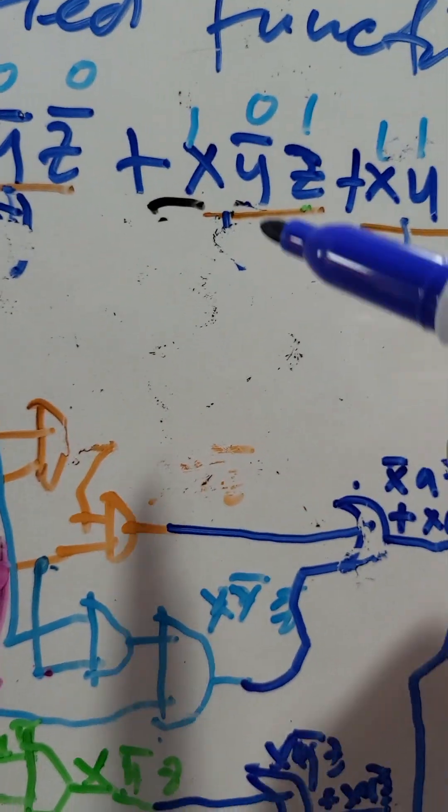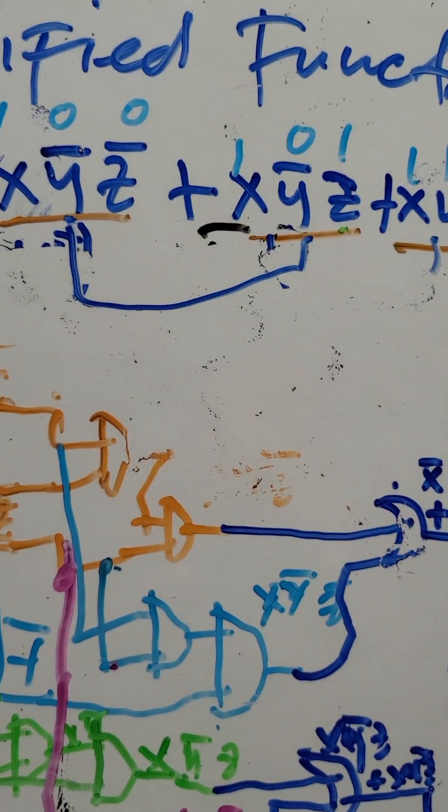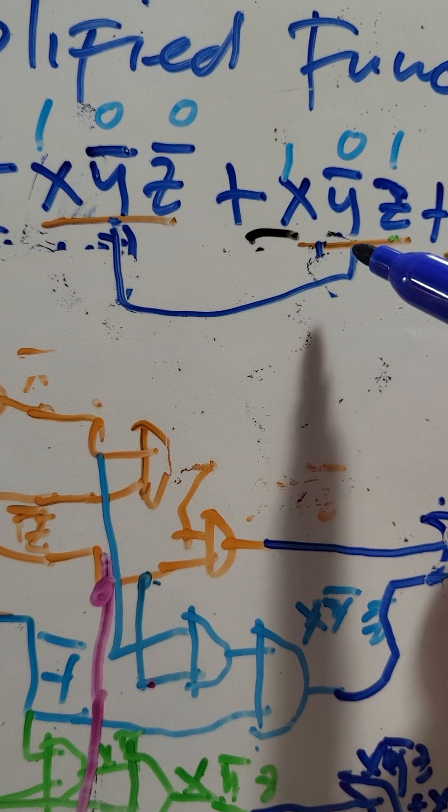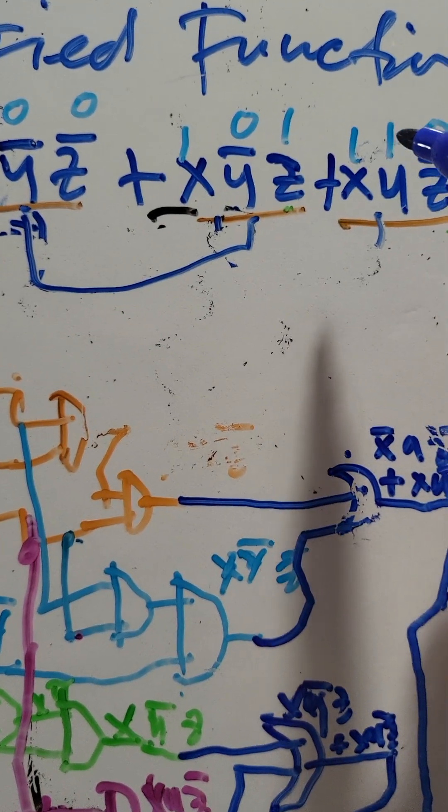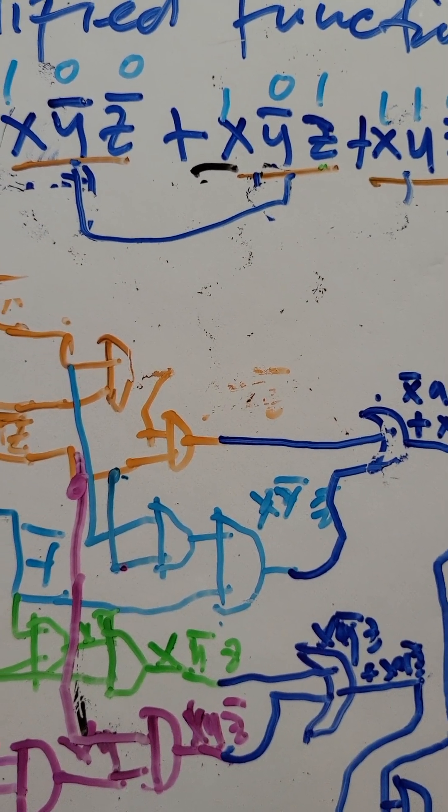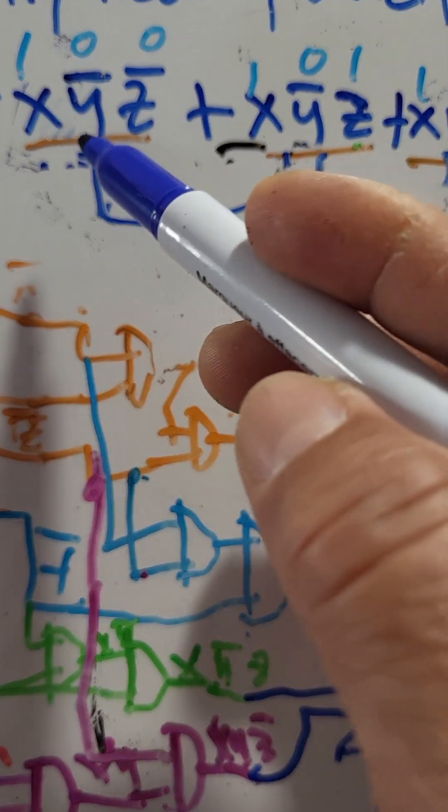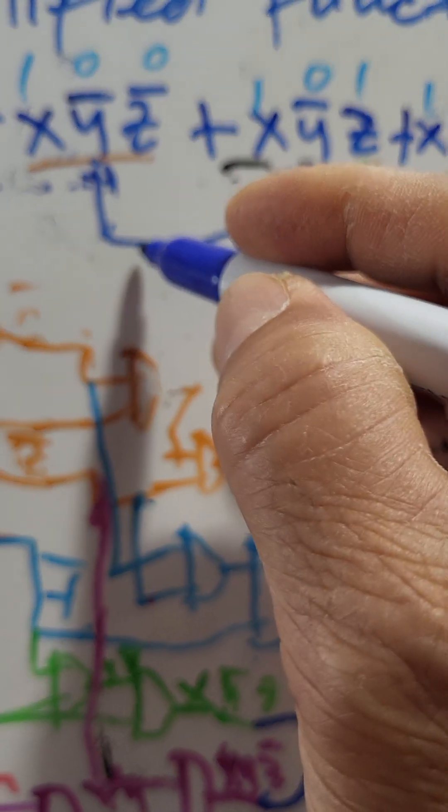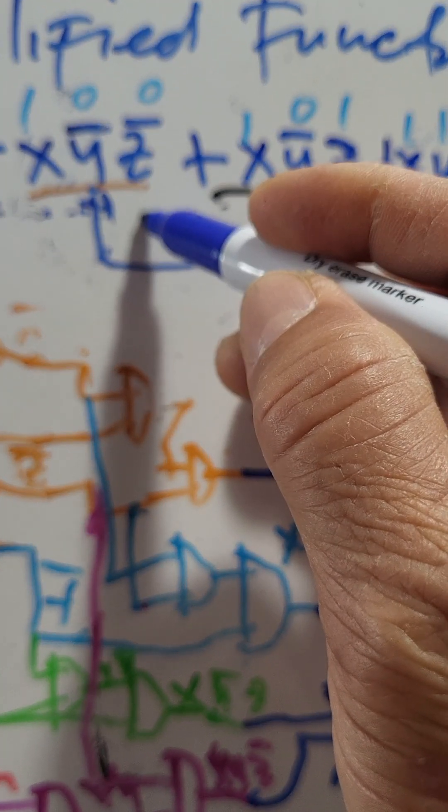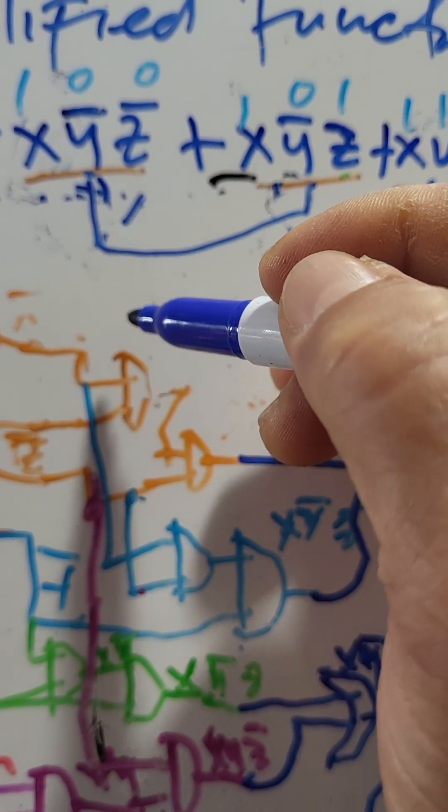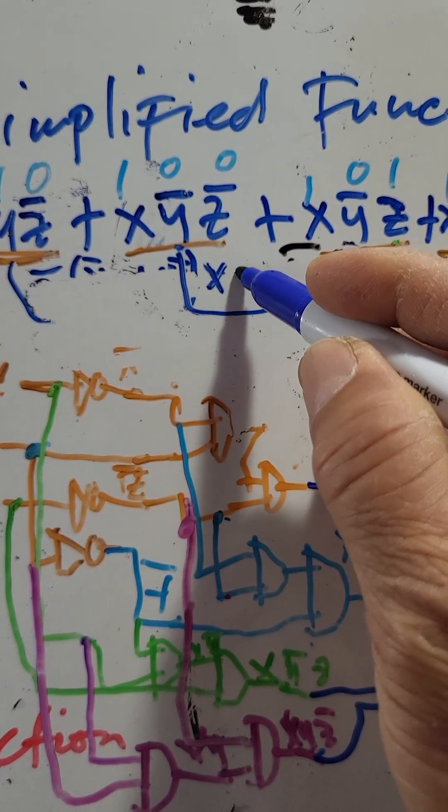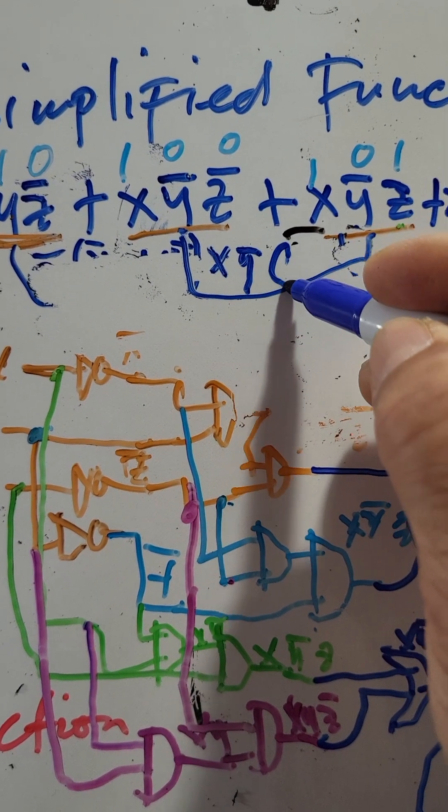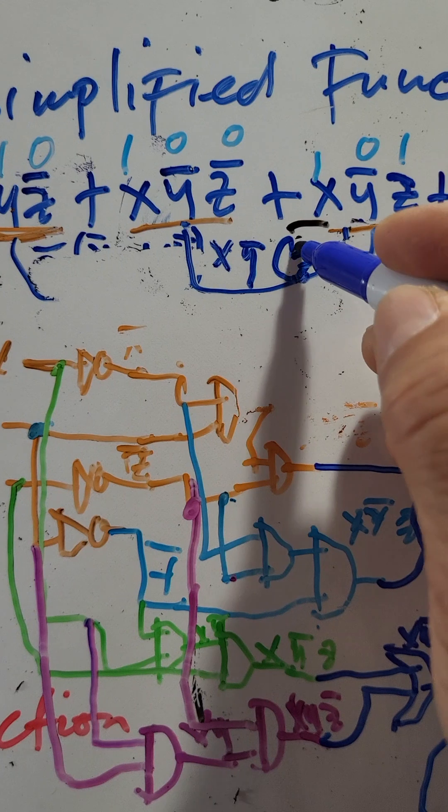So, how about if we pair this one? X Y bar Z bar, X Y bar Z. So, what are the common? The common is X Y bar. So, common is X Y bar. Then, what is remaining is Z bar plus Z.